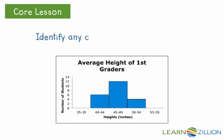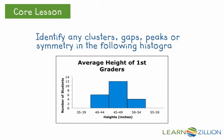We can do the same thing for a histogram. So we have a peak between 45 and 49. And then we have gaps at either end of the graph between 35 and 39 and 55 and 59. And our cluster is in the middle between 40 to 54. And our graph is not symmetrical.